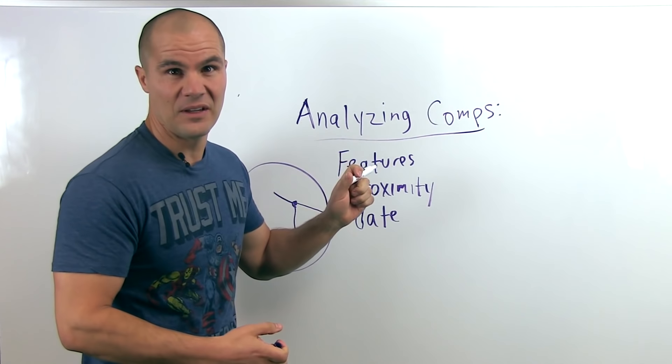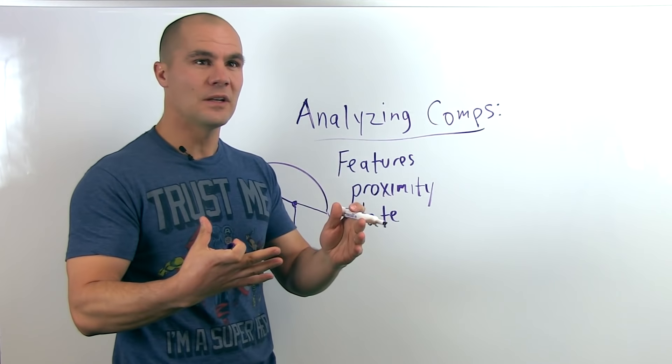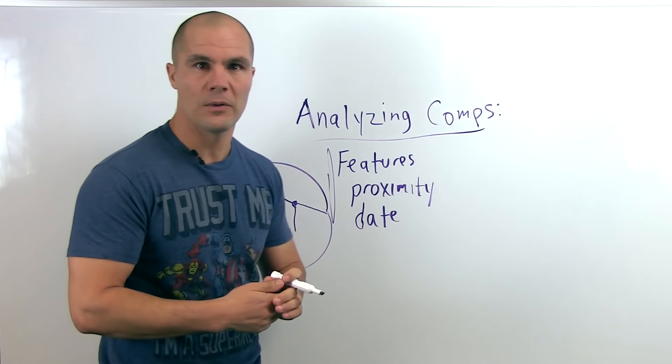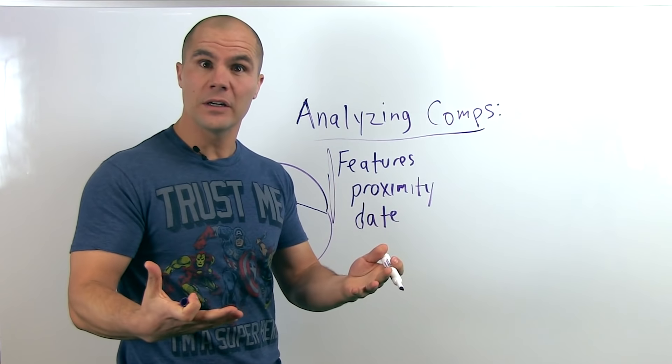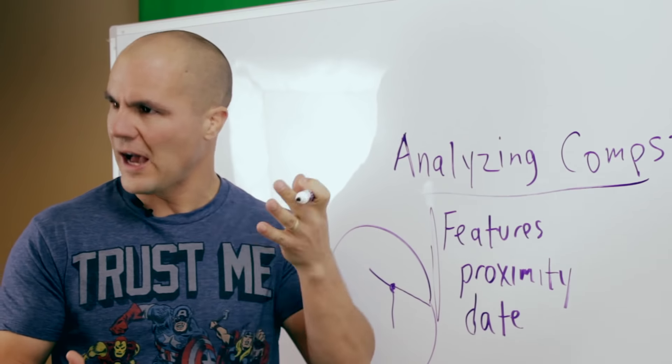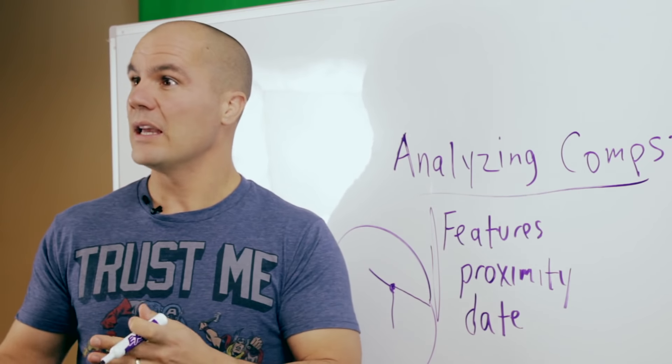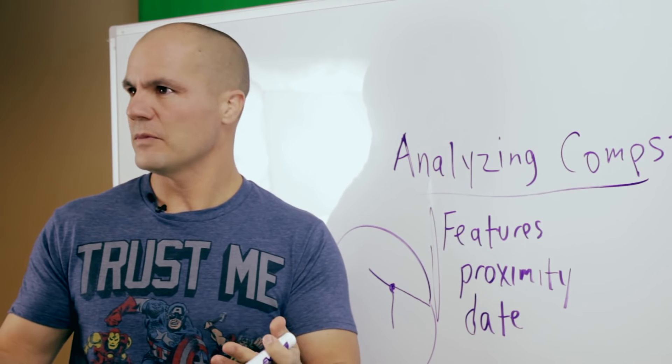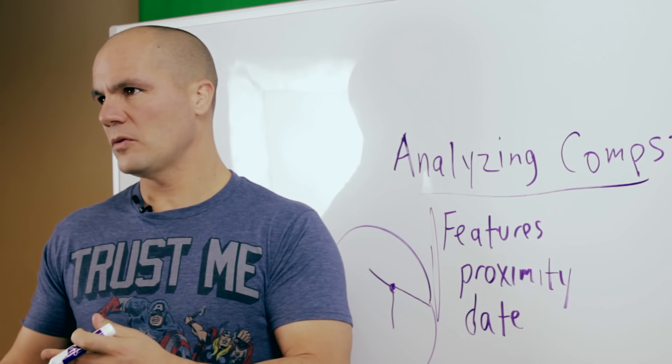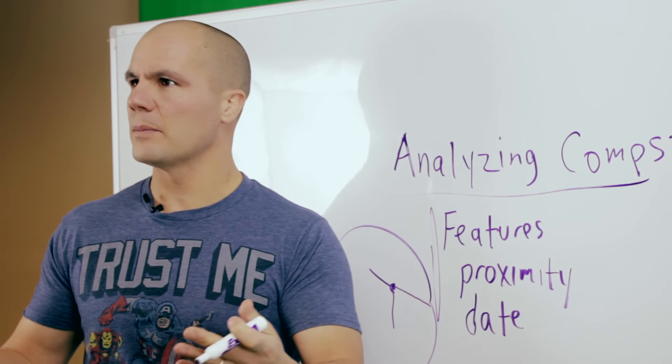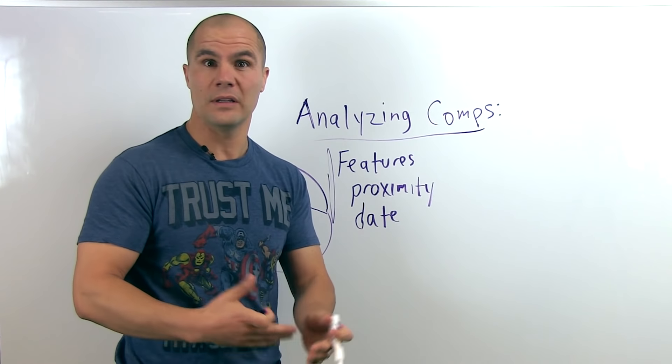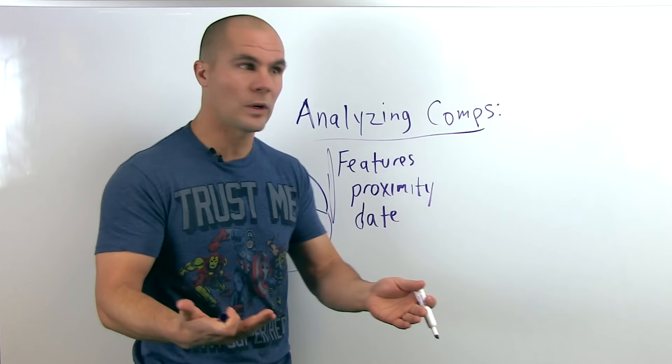Now I try to find five if I can find five really good comps that meet this criteria we talked about. Then I can feel pretty good about what my value is, and what I do is I take the average of those five and I say, okay, the average of these five is, you know, two hundred thousand or X price per square foot. My property is two thousand square feet. Multiply the price per square foot by my square footage—that gives me my value of that property, after repair value if it's a fix and flip or whatever.